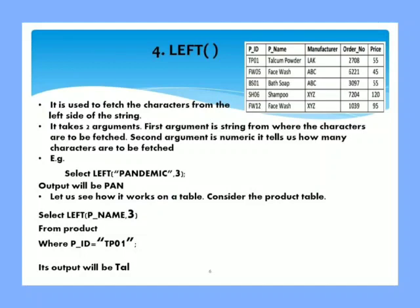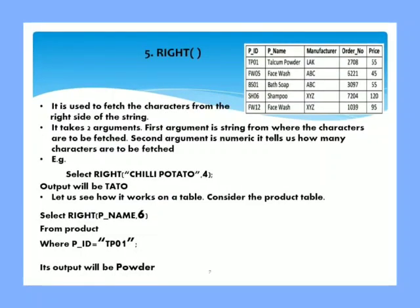Now how it works on a table? Same product table we will consider. Suppose here we have written the query select left PNAME comma 3 from product where PID equals TP01. Now let us have a look on the table: TP01, what is the PNAME written beside it? It is Talcum Powder. So we have to fetch how many characters? Three characters. That is TAL. So the output will be TAL.